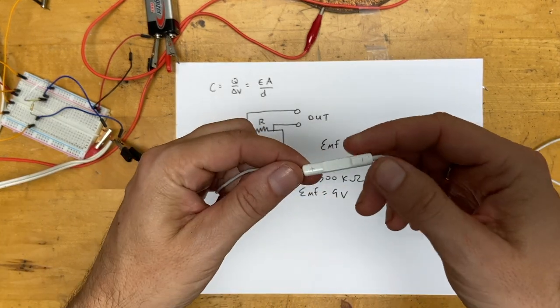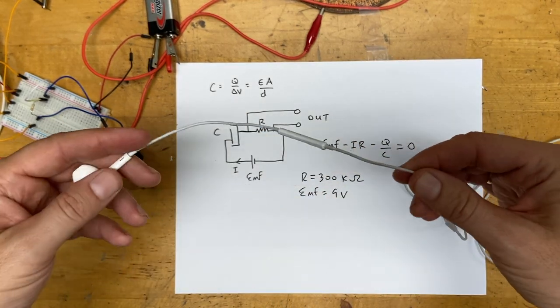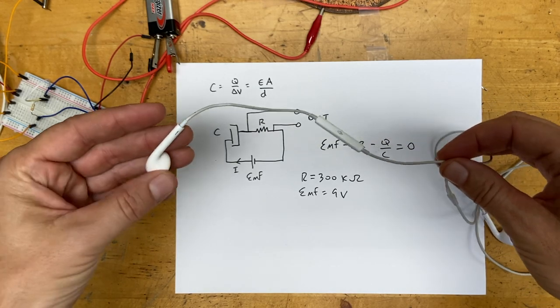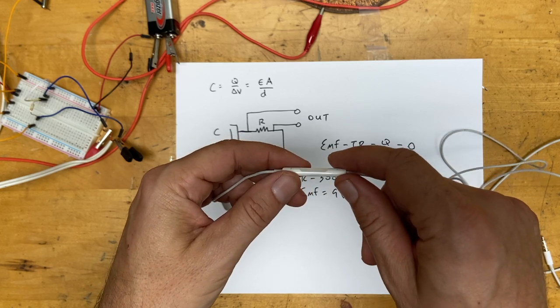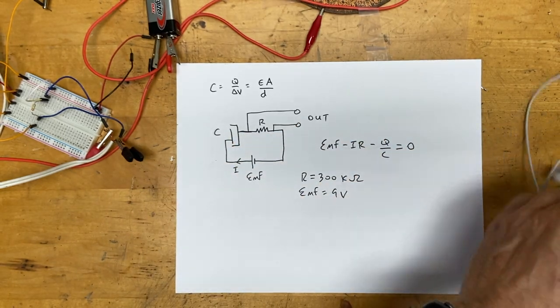This is the earbuds for an iPhone. You can make these condenser microphones really small. Let me tell you how they work and then we're going to build one and hopefully record something if that works.